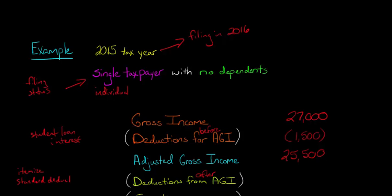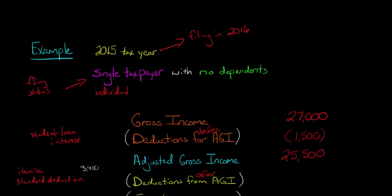Itemizing means we add up things like charitable contributions and mortgage interest. Your interest on your first two mortgages is itemizable. So let's say all those itemized deductions add up to $3,400 — it might include some medical expenses or charitable contributions. Now, what you want to do is compare that to the standard deduction offered based on your filing status. As of the 2015 tax year, the standard deduction is $6,300.